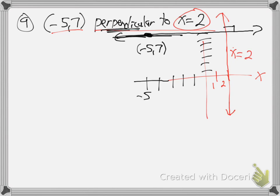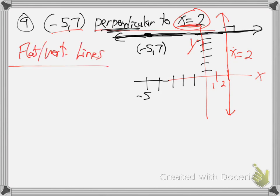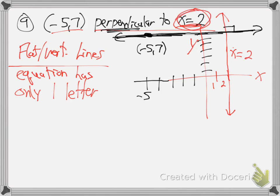So this is the line we're looking for the equation for — it goes through the x equals 2 line like that. If our line is a flat line, then any flat or vertical line means the equation has only one letter, just like x equals 2. x equals 2 is a vertical line going through the x-axis at 2. Ours is perpendicular to that, so it's a flat line going through the y-axis. How high does it go through the y-axis? Up at 7. It's just y equals 7. Done.